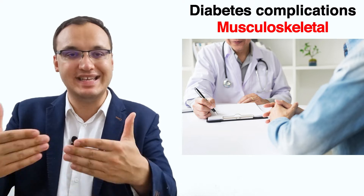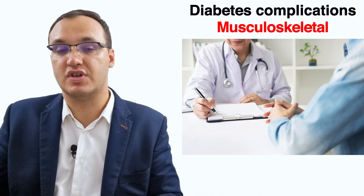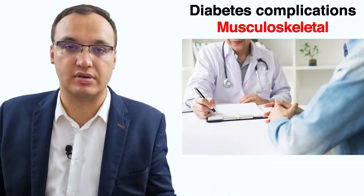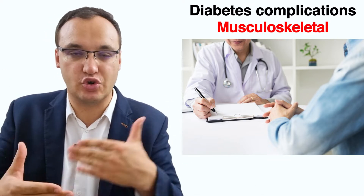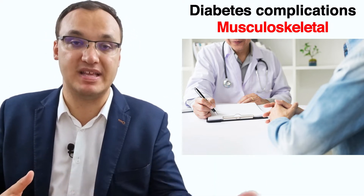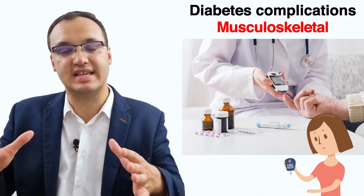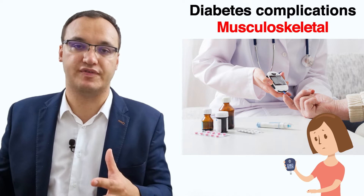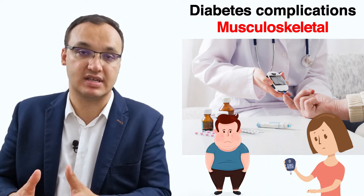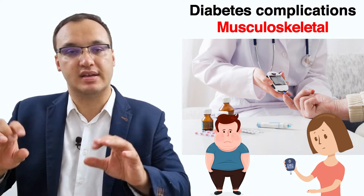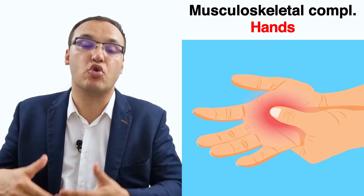Doctors need to actively ask about these symptoms, as patients may not volunteer this information — because back pain is very common and patients often don't make the connection to diabetes. Musculoskeletal complications are most commonly seen in patients with a very long-standing history of type 1 diabetes, but they are also seen in patients with type 2 diabetes. We will discuss the complications that affect the hands first, as these are the more common ones.